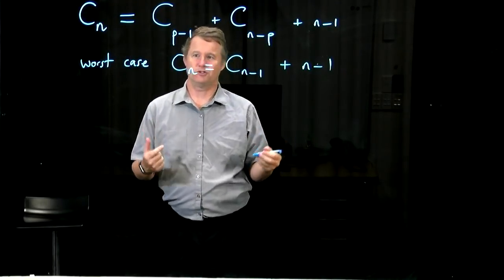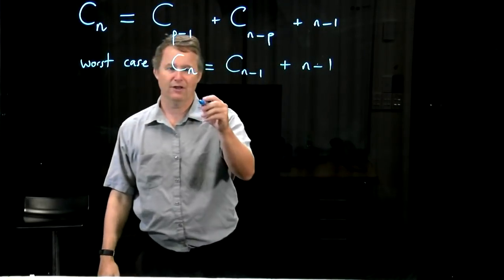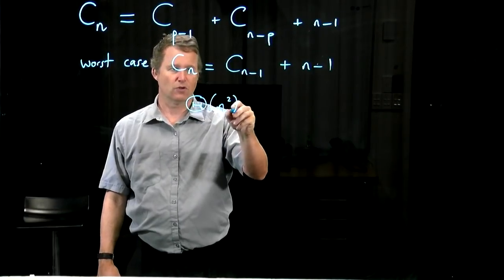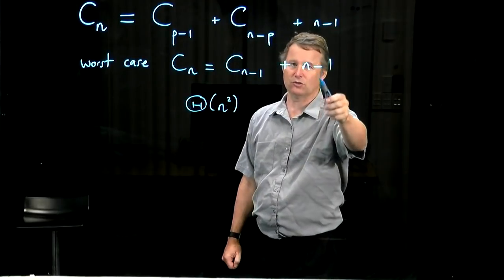It's very easy to see that if your input is structured so that you get the worst case every time recursively all the way down, you're going to get run time which is of order n squared. You're basically adding n-1, n-2, all the way down.